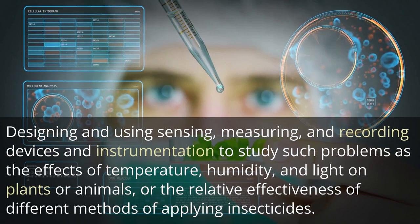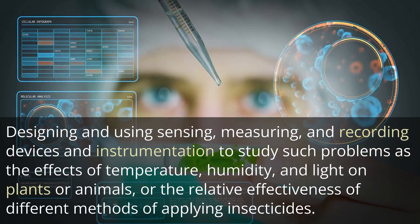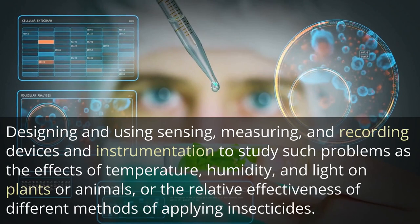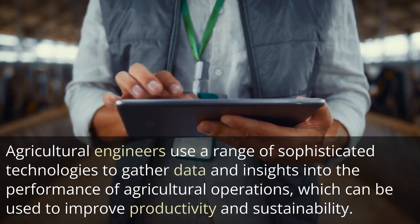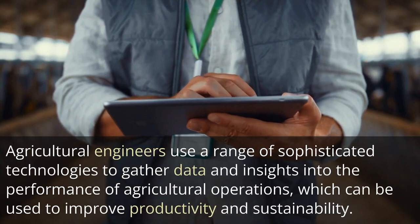Agricultural engineers design and use sensing, measuring, and recording devices and instrumentation to study problems such as the effects of temperature, humidity, and light on plants or animals, or the relative effectiveness of different methods of applying insecticides. They use a range of sophisticated technologies to gather data and insights into the performance of agricultural operations, which can be used to improve productivity and sustainability.